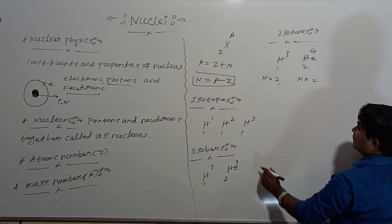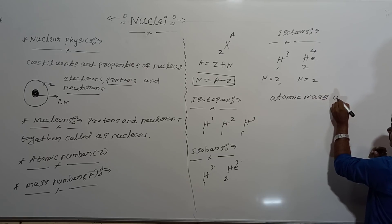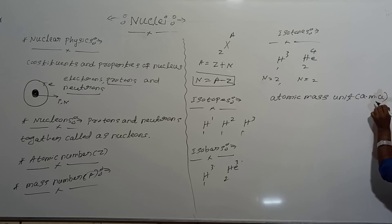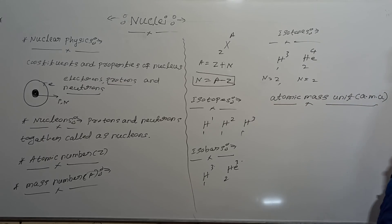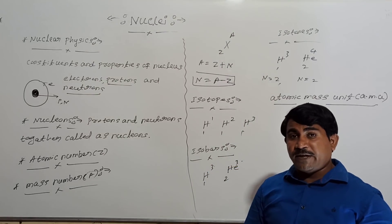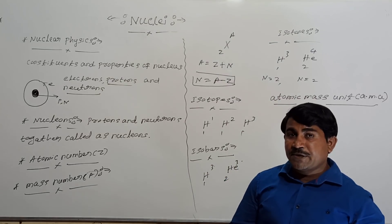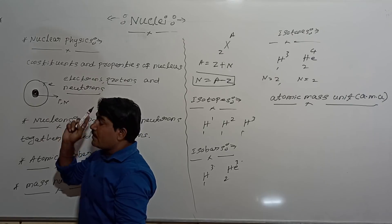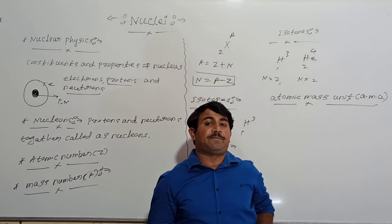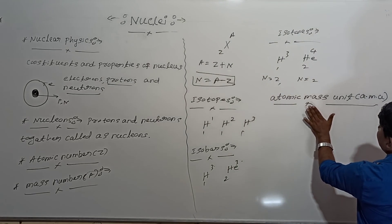The next basic term is atomic mass unit, abbreviated as AMU. The size of the atom is of the order 10 to the minus 10 meter, and the size of the nucleus is of the order 10 to the minus 10 meter. The mass of the atom is very very small compared to kilograms, that is why the mass of the atom is represented in terms of atomic mass unit.